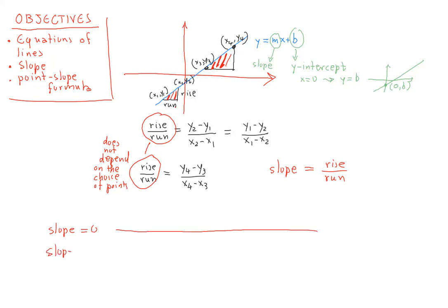If the slope is positive, then the line goes up as you see it from left to right.